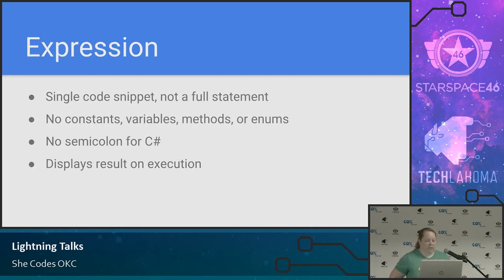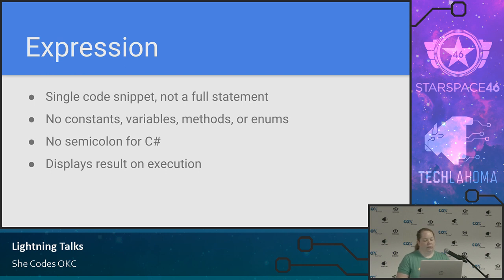An expression is a single code snippet — it's not a full code statement, not a line of code, just a little piece of code. We can't use constants, variables, methods, or enums. In C# we would generally end a statement with a semicolon, but these aren't statements, so we're not using a semicolon. When we run our code, it will just display the results.